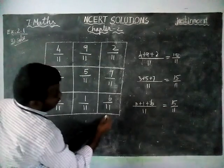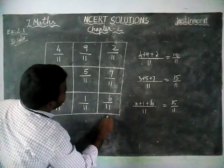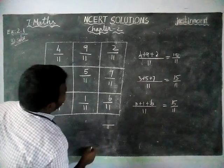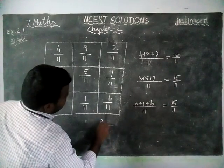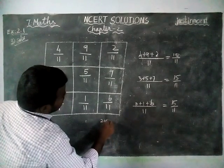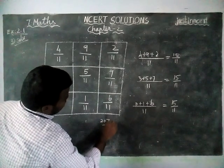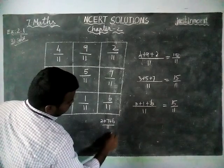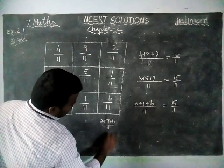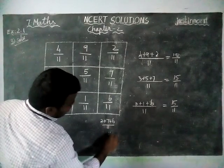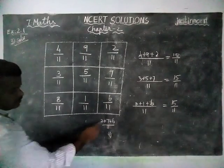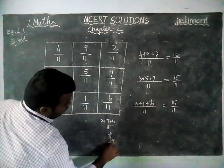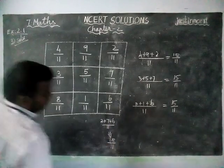Now we are going to check the columns. Common denominator 11. 2 plus 7 plus 6: 9 plus 6 is equal to 15 by 11.